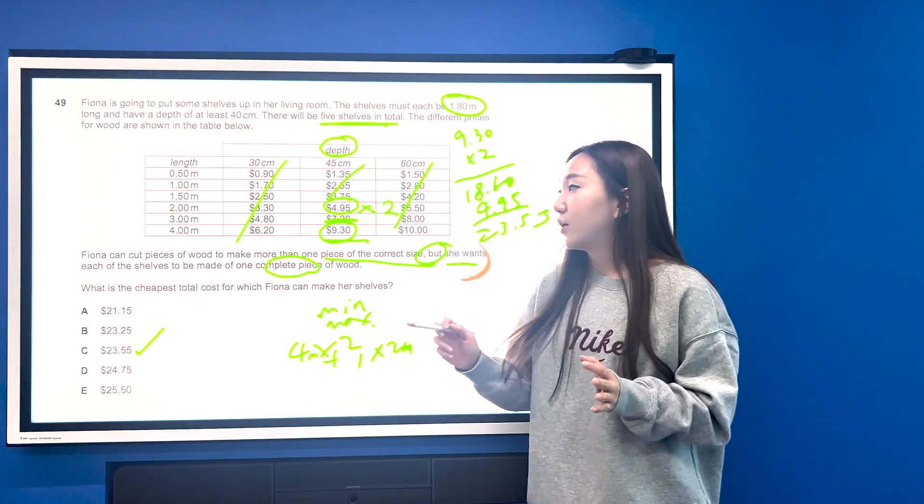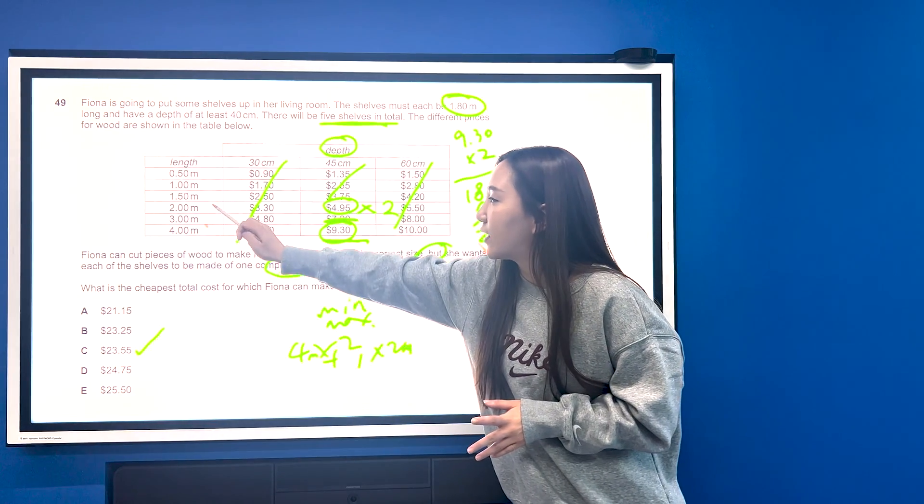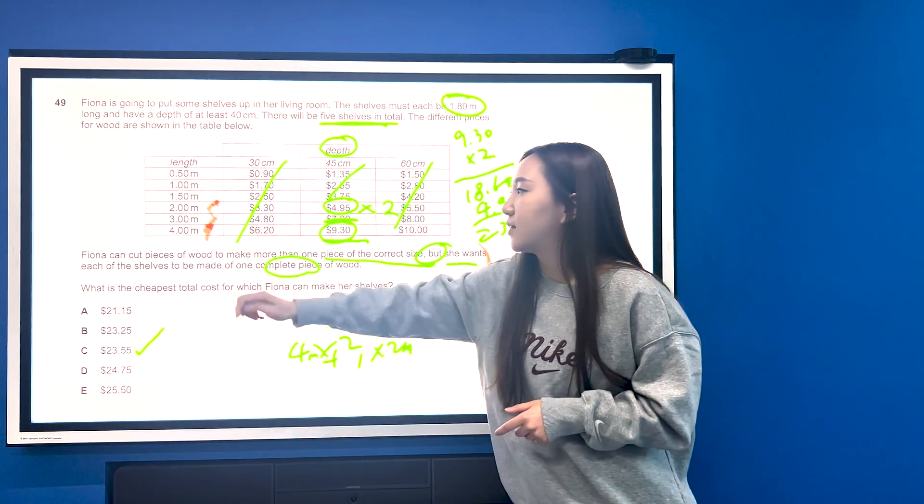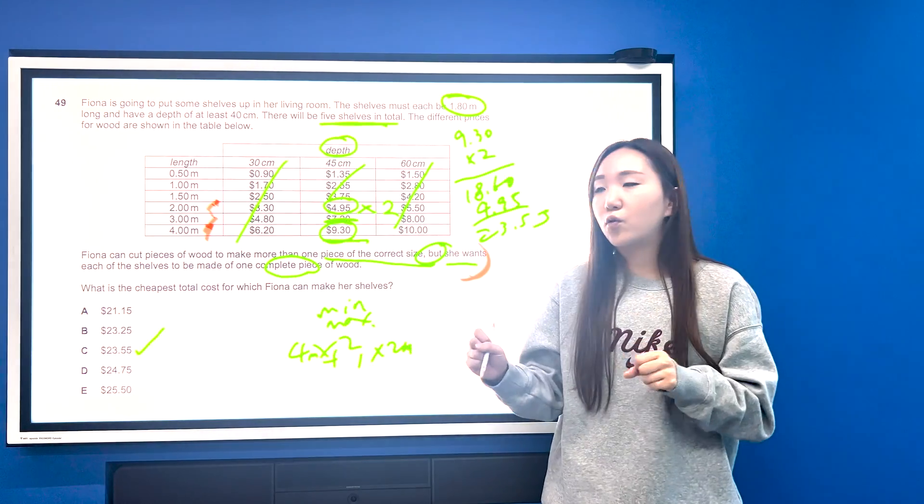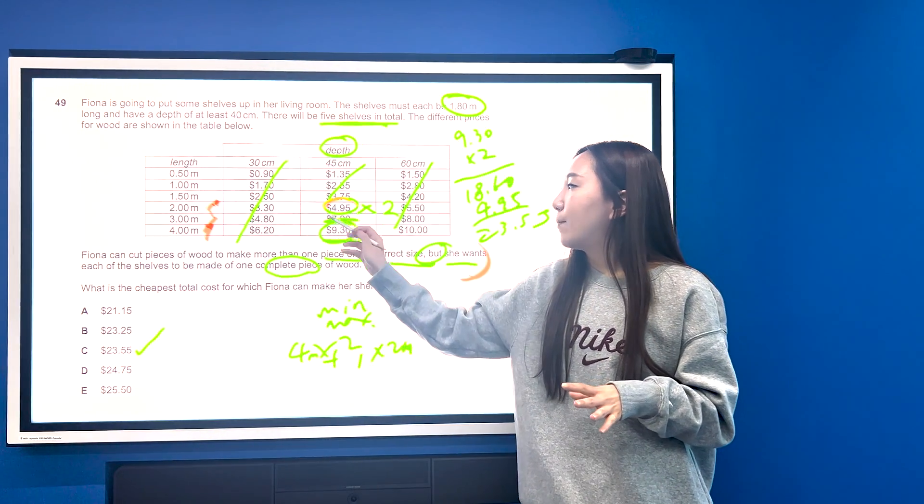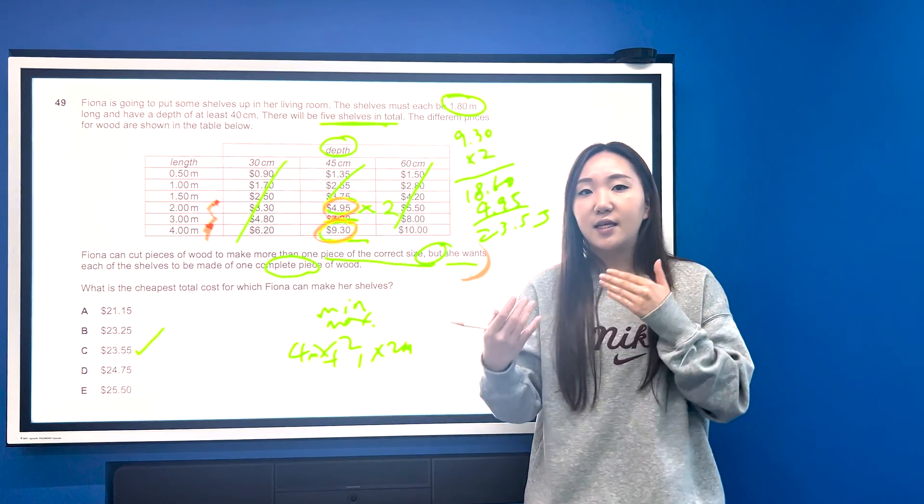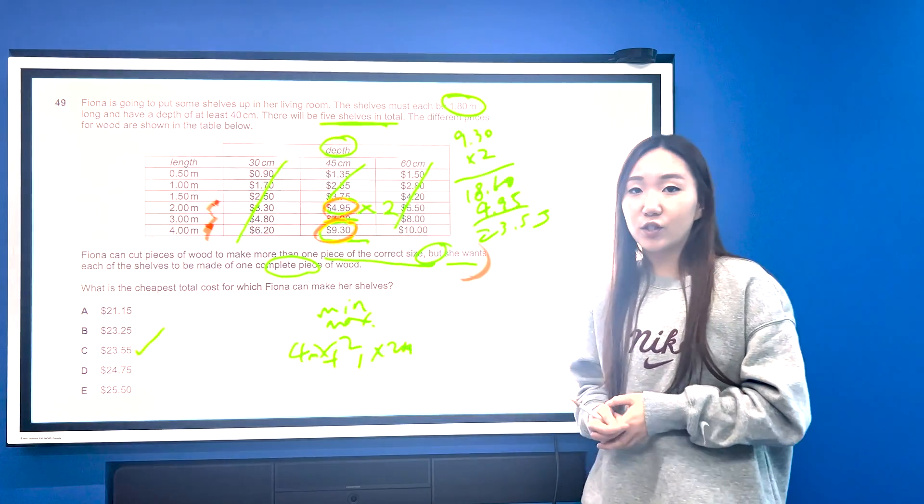And then finally, I should mention that because you're given information like this, always try and put it into the same, like a comparable thing. So obviously the 2 and the 4 are not directly comparable. So you want to make these figures so that we can see immediately which one's more expensive or cheaper.